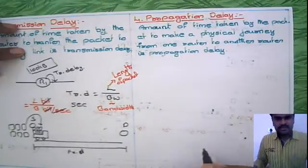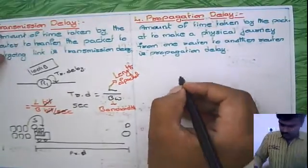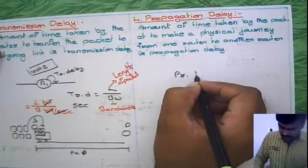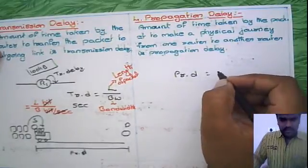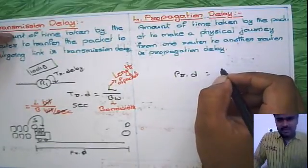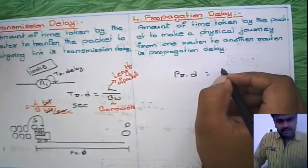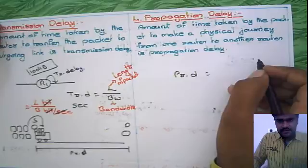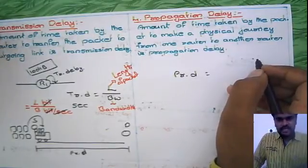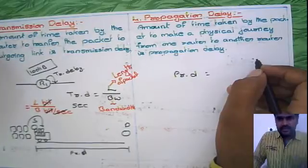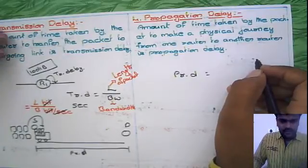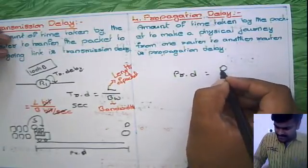For propagation delay, as we know, time and distance - how much time it is taking to travel a certain amount of distance with this velocity, with this speed. So we have the formula: distance by velocity. Same way here also, how much distance is going to be traveled and with how much speed.